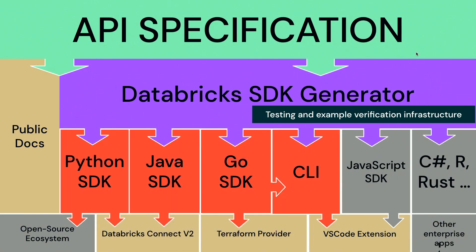How is this all possible? At the center of everything, we have an API specification fed into a Databricks SDK generator with robust testing and example verification infrastructure. The generator creates the Python SDK, which is depended upon by open-source projects and DBConnect V2 for authentication. We also have the Java SDK, the Go SDK used to build the Terraform provider and new CLI, a JavaScript SDK for the VS Code extension, and more like C#, R, and Rust coming.